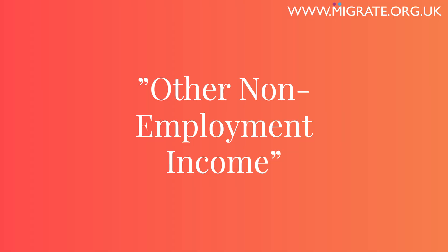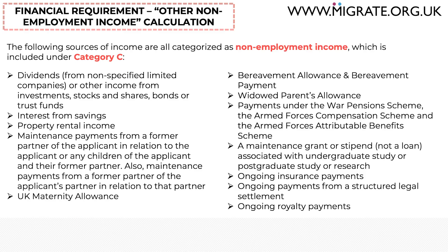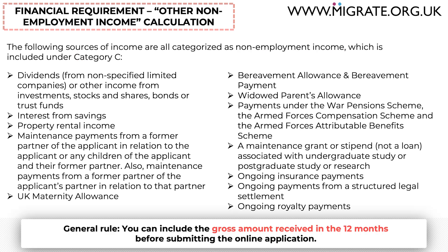Non-employment income: category C comprises of numerous types of income, a list of which you can see here. Unlike employment and specified limited company income which we previously discussed, both the applicant and sponsor can include this towards the financial requirement. So, for example, if the applicant earns property rental income from an overseas property, as long as that property rental income is evidenced correctly and the requirements are met, that income can be included. Other than maintenance grants and stipends, the general rules for these different types of income is to include the gross amount received in the 12 months before submitting the application.